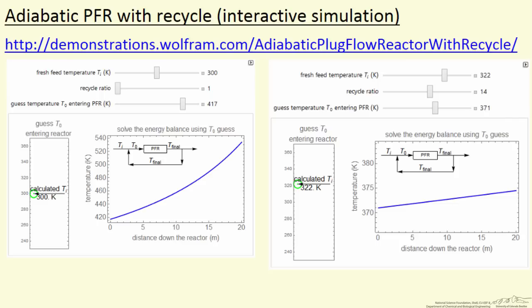There's a possibility to have more than one solution, more than one value of T0 that will allow us to solve the equations. Once we have feedback like recycle, the same kind of behavior we observed in CSTRs, we have the potential for multiple solutions.